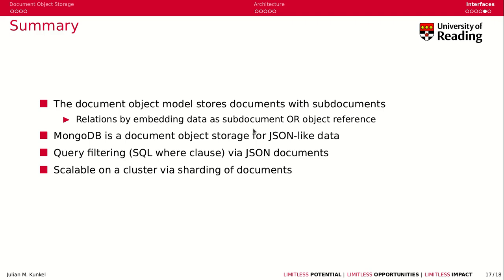So, to wrap up the talk about MongoDB, we learned the document object model stores documents with sub-documents and you can form relations by embedding data as sub-documents or by creating object references. MongoDB is a document object storage for JSON-like data. That means it's schema-less by default. You can store anything into MongoDB.